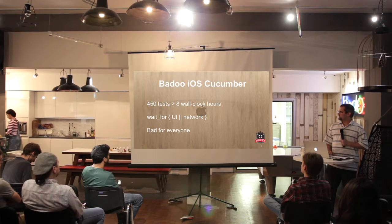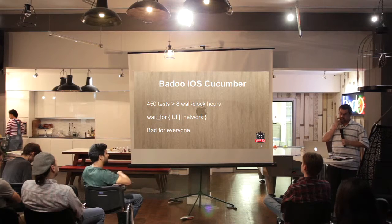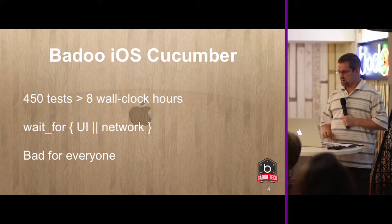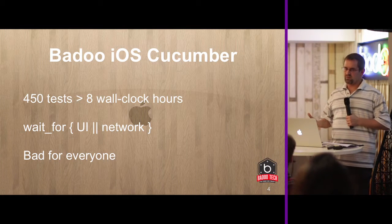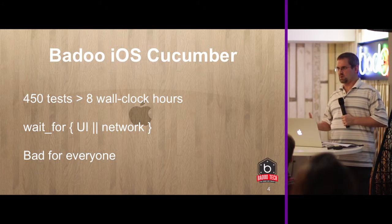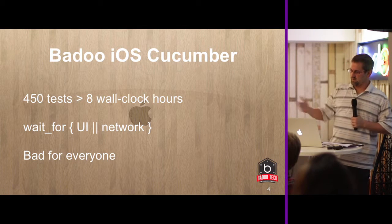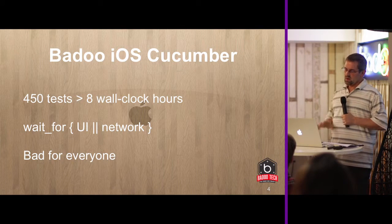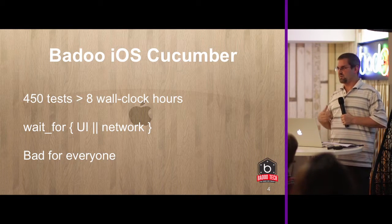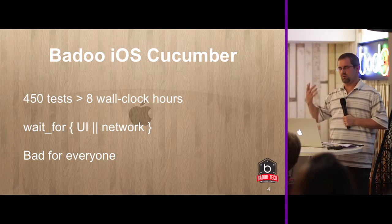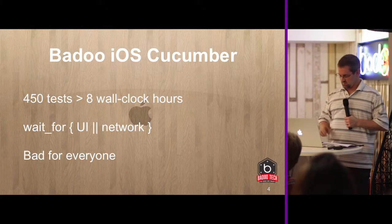On iOS, unfortunately, there's a restriction that you can't run more than one device or one simulator at the same time, which means that 450 tests means eight wall clock hours. So we start them in the evening, we go home, and they fail, and everybody's unhappy. Most of this time is waiting for the user interface or for the network, so there's an awful lot of wasted time that could be used in parallel the way Android uses it.